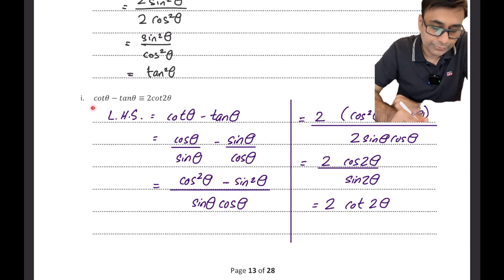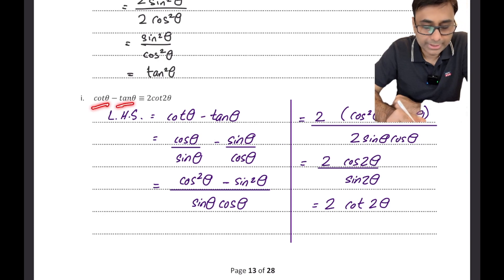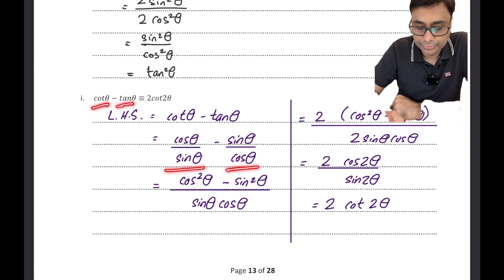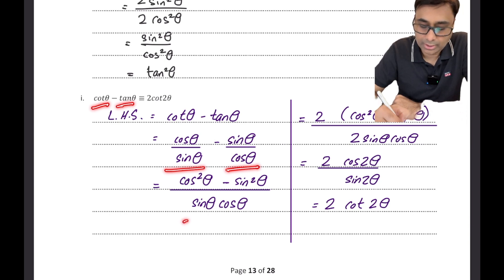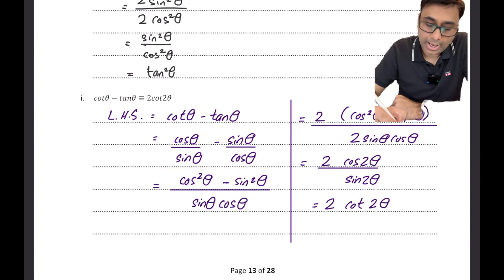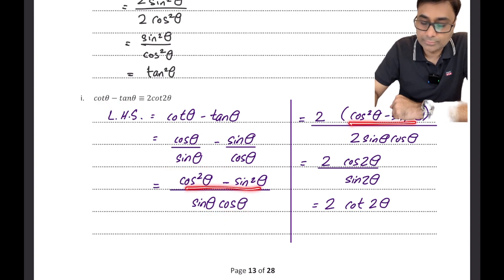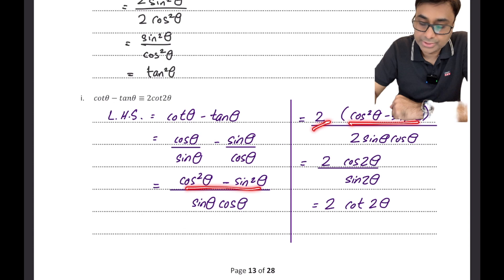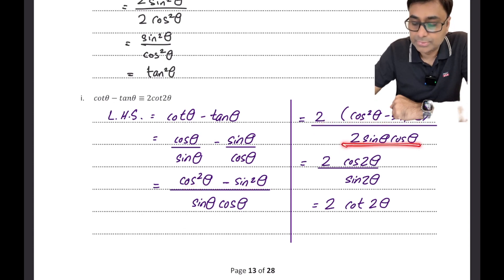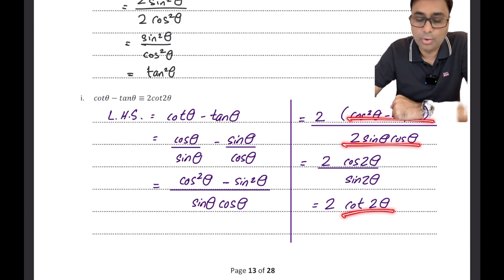Similarly proving cot θ - tan θ: I rewrite as cos θ/sin θ - sin θ/cos θ, take an LCM to get cos²θ - sin²θ over sin θ cos θ. A missing 2 can be introduced so the denominator becomes sin 2θ and the numerator becomes cos 2θ, giving cot 2θ.